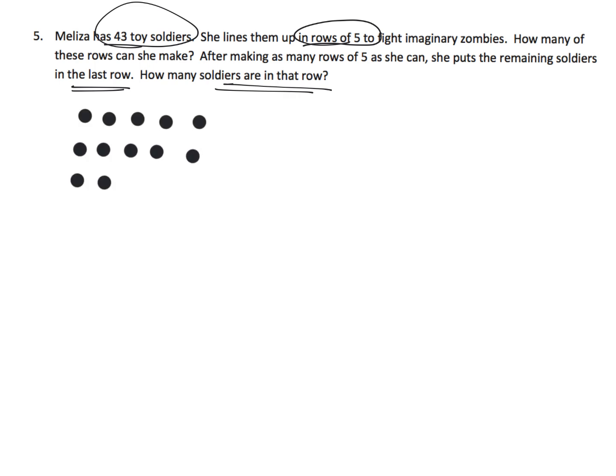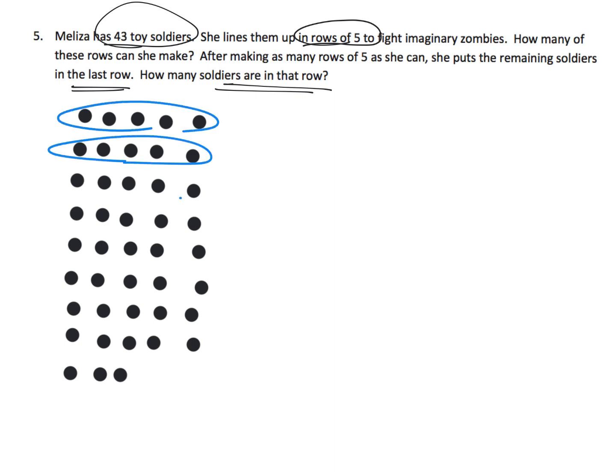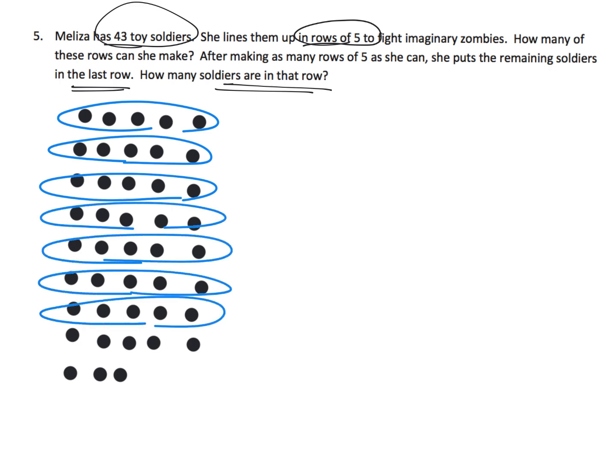So 1, 2, 3, 4, 5, 6, 7, 8, 9, 10, 11, 12, 13, 14, 15, 16, 17, 18, 19, 20, 21, 22, 23, 24, 25, 30, 35, 40, 41, 42, 43. So how many rows did she make? She made 1, 2, 3, 4, 5, 6, 7, 8. So she did 43 divided by 5. She got 8 rows, plus she has a remainder of 3. We have 3 little guys left over down there.